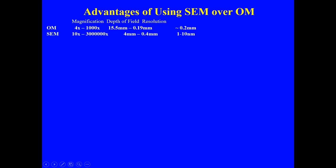Let's compare the SEM versus the optical microscope in terms of magnification, depth of field, and resolution. In magnification, an optical microscope provides images in the range of 4x to 100x, whereas with an SEM we can take images in the magnification range of 10x to 30,000x. That is the key difference between the SEM and the optical microscope.